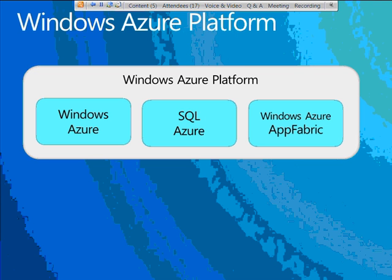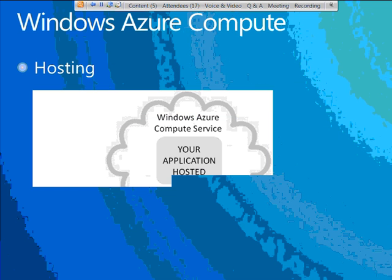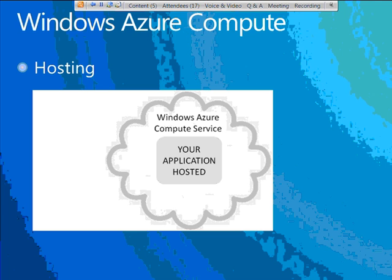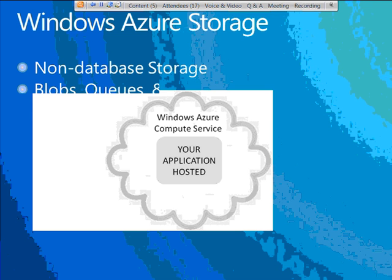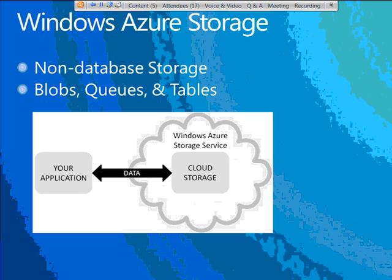In the Windows Azure portion, one of the most important services is Windows Azure Compute — the ability to have your applications hosted in an Azure data center. This service is distinctive because your application is actually living and executing in the data center. In addition, the Windows Azure portion also includes Windows Azure Storage: non-database storage available as blobs — like files — queues, and cheap data tables that are not relational.